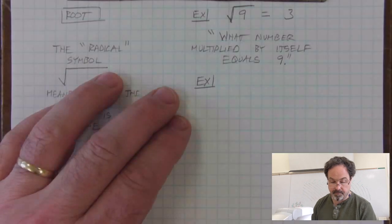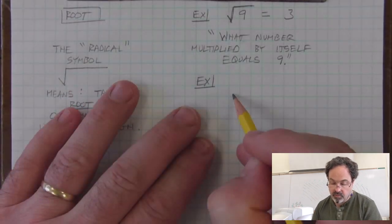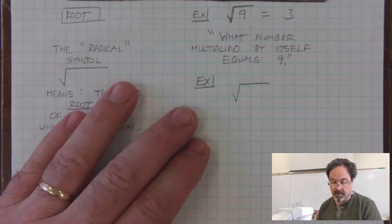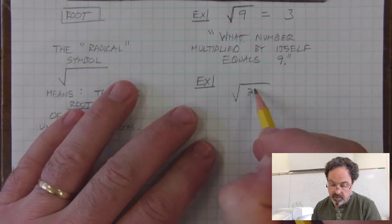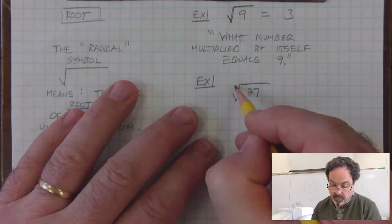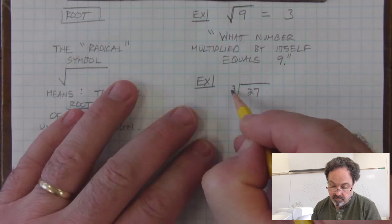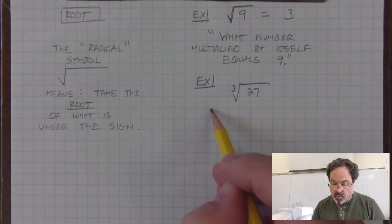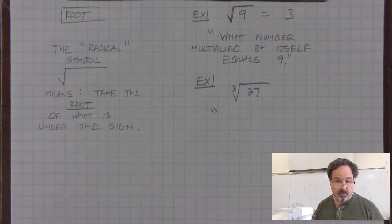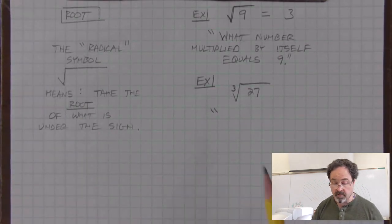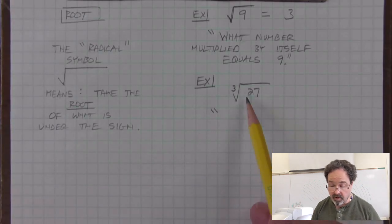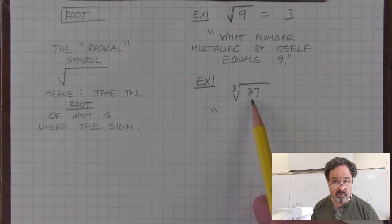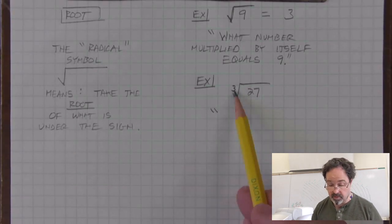Let's have another example. We can use this idea of root in a variety of ways. If we use the radical symbol but also put a 3 here, then we're trying to find the number that when multiplied by itself and multiplied by itself again equals 27.